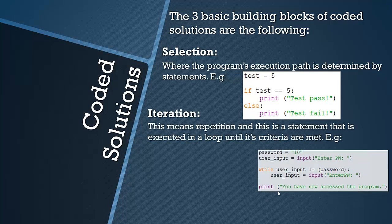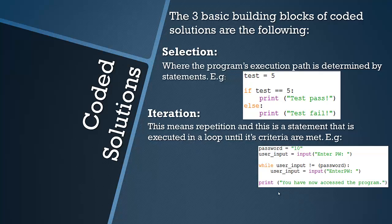Then you have iteration and iteration simply means repetition. These are a single statement or multiple statements that are executed in a loop until its criteria are met. So this means basically you can't go through the program unless something is done. This is useful for maybe a password scenario. Obviously code that deals with passwords is far more complex than this but if you say hypothetically a password is 10 and this code will basically make you enter the password until it equals 10.